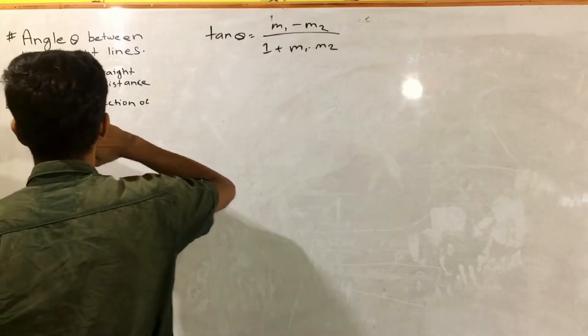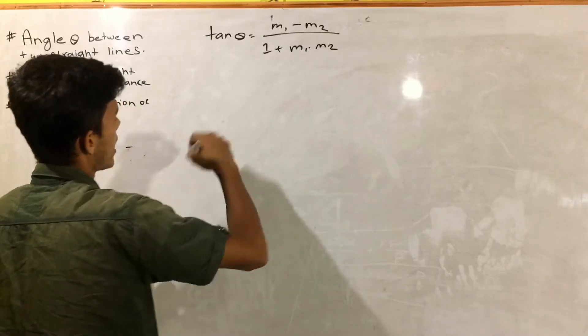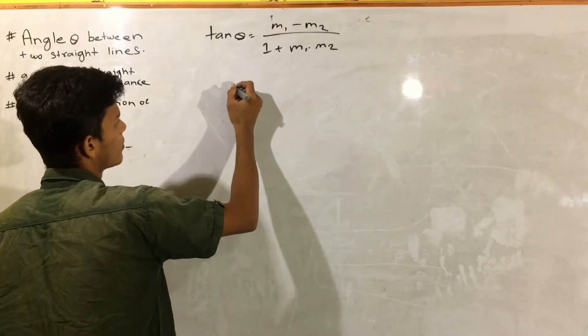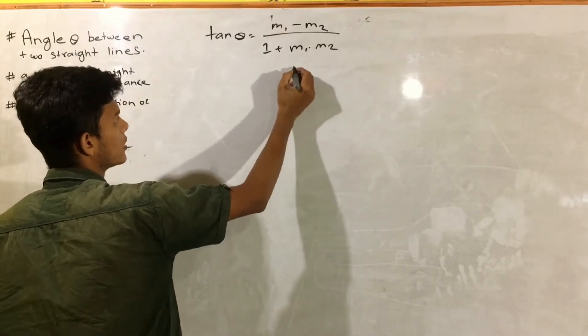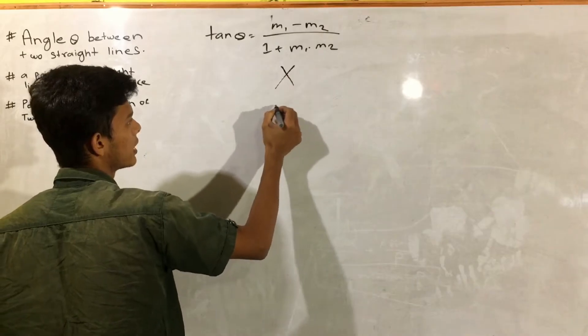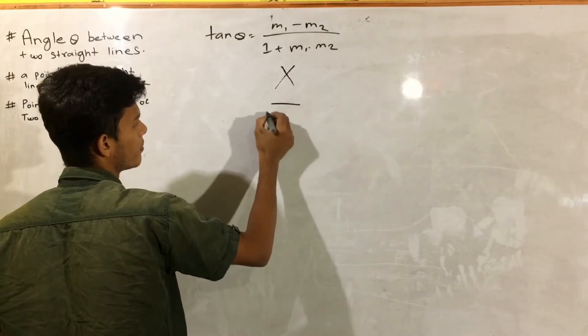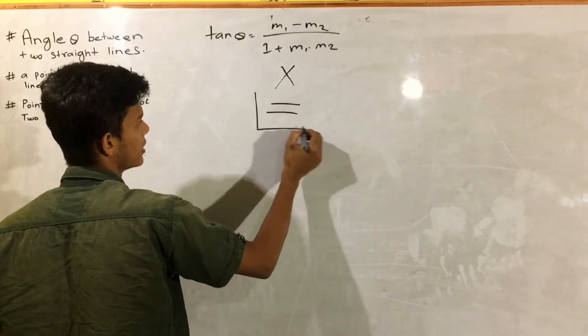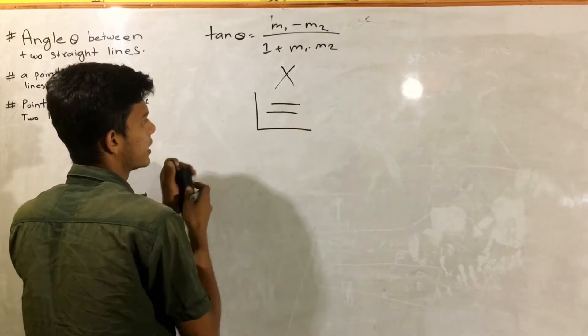This is the formula: cancelled into M1 minus M2 divided by 1 plus M1 into M2. If this is the same program, then the angle between the lines is parallel. If this is the angle, then we will solve the angle.